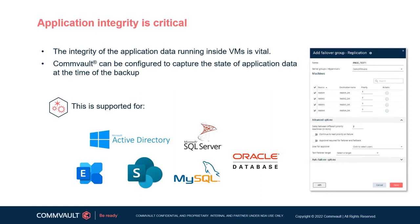Commvault's application-aware extension capability supplements the basic virtual machine protection methodologies for VMs hosting applications. Commvault automatically inserts an application agent inside the guest VMs in order to manage the quiesce of the application or database activity, temporarily redirecting writes. This means the application itself is in a consistent state of readiness for the virtual machine level backup operation.